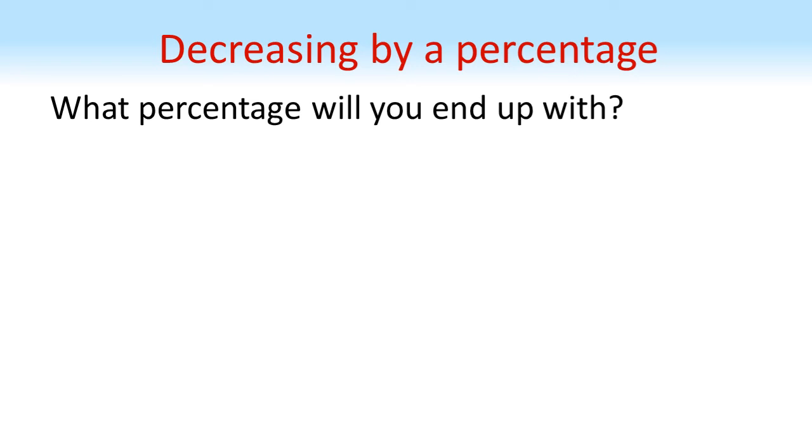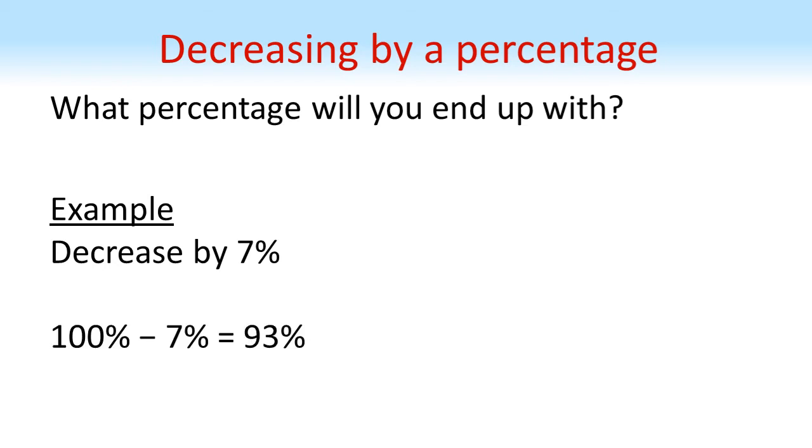If we want to decrease by a percentage, it's a very similar trick. We think about what percentage you're going to end up with. For example, if we're decreasing by 7%, you start with 100%, take away 7%, and end up with 93%. We can use this to find our answer.